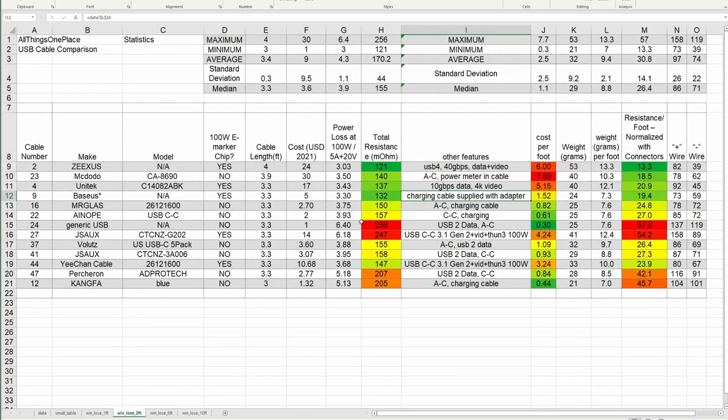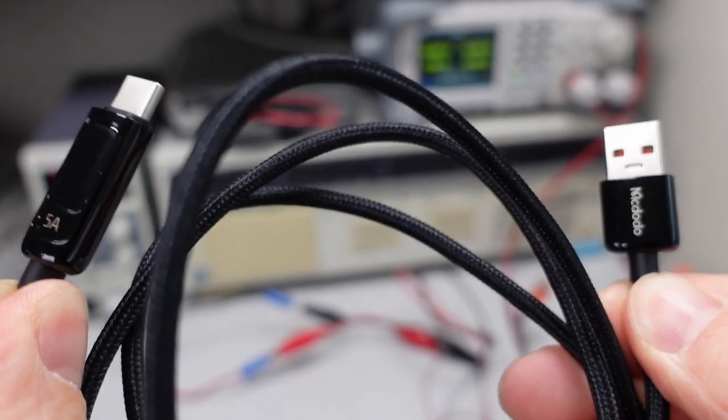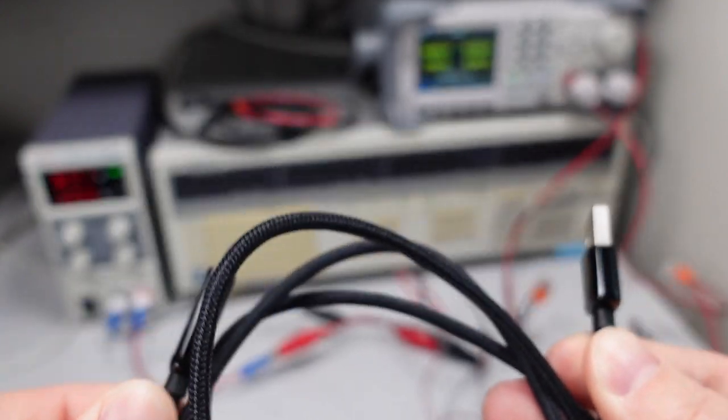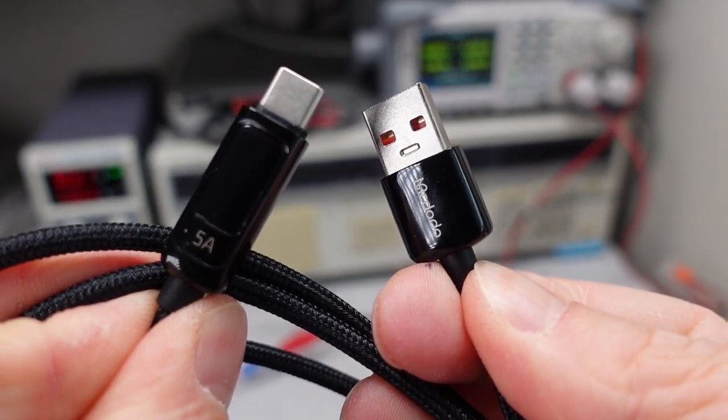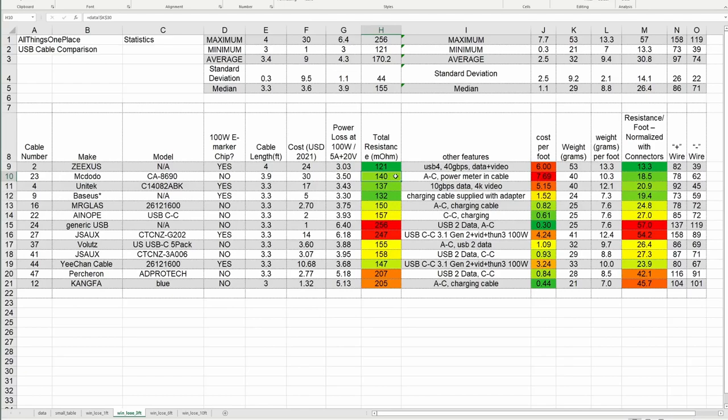Moving on to the 3-foot cables, we can see that the ZigSys cable still came out on top. There's one of these cables, this McDodo cable, and this one has a power meter in the cable. So it's really expensive, but it has that unique feature. And overall, the actual resistance of the cable was not bad. Some not-so-great cables mixed in here. The JS-Aux actually did very poor in this category, even worse than the Kang-Fa Blue cable.